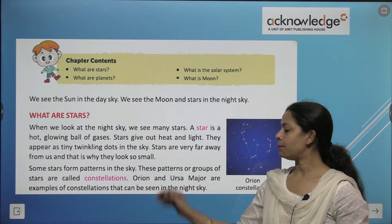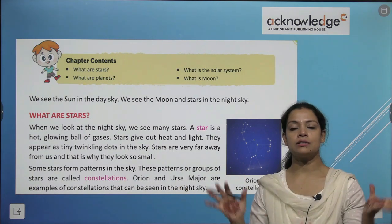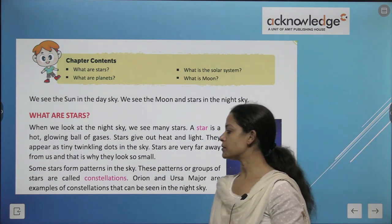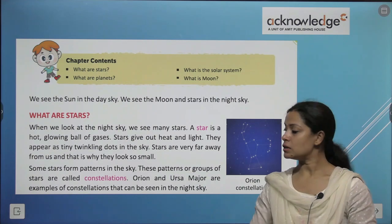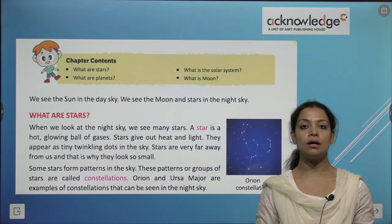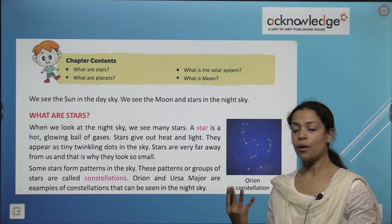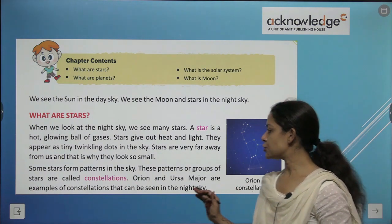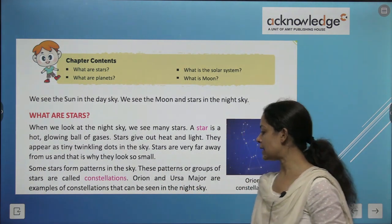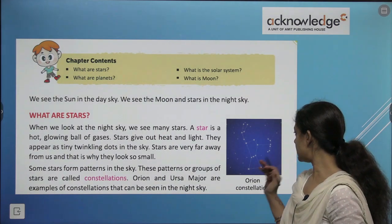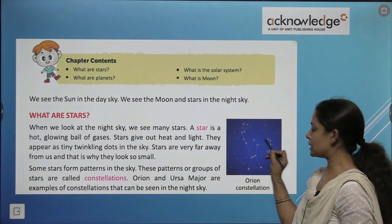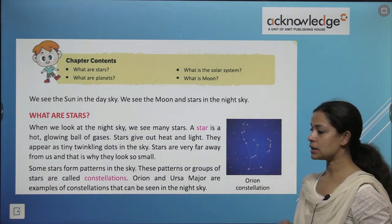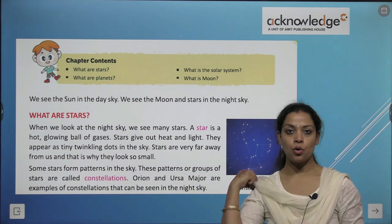Some stars form patterns in the sky. A cluster or collection of stars that forms a pattern in the sky is called a constellation. Orion (O-R-I-O-N) and Ursa Major are examples of constellations that can be seen in the night sky. If you ever focus on the sky during the night, you will see this type of structure — this is called the Orion constellation.